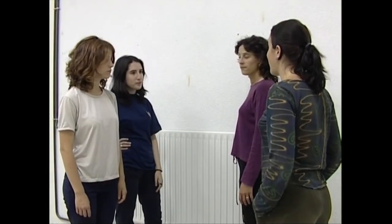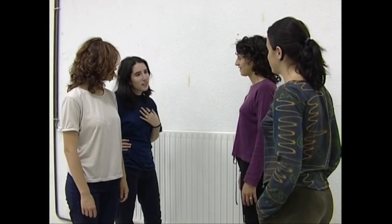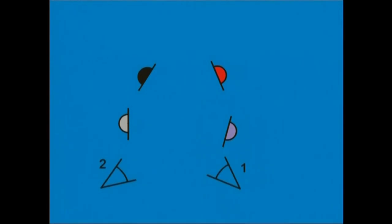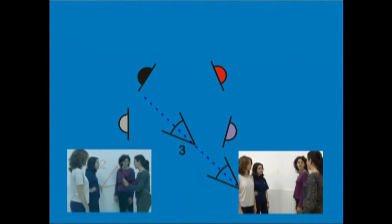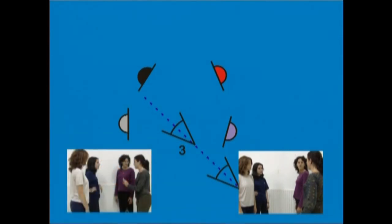Lau aktore zutik itzegiten. Hiru kamera kokagune erabiliko ditugu elkarrizketa grabatzeko. Bi kokagune kanpoaldeko angelu kontrajarrian, eta bestea barrualdeko angelu kontrajarrian. Bat eta hiru deituriko kokaguneak ikusmenezko ardatz berean daude. Elkarrizketa laburra denean, bat eta bi kokaguneetatik hartutako irudiez munta daiteke. Baina oso luzea denean, hiru kokagunetik hartutako planoa erabiliko dugu elkarrizketaren bigarren partea jasotzeko. Horrela, ikusmenezko barietate handiagoa lortuko dugu.